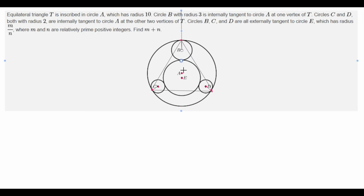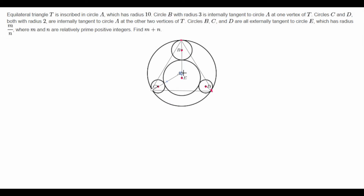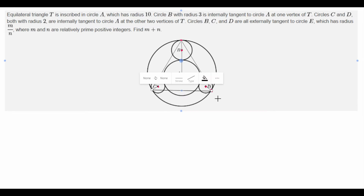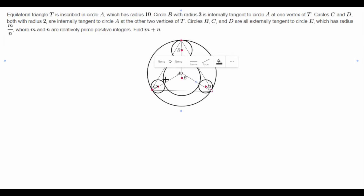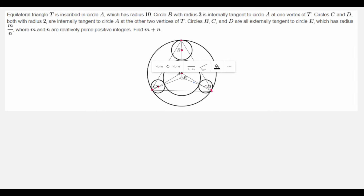So let's connect the circles right now. We see that B connects right here. Circle A is tangent to circle C at one vertex, which means that A, the tangency point, and C will be collinear. Same thing with A and D. And then let's connect the remaining centers with center E as well. So now we've connected a bunch of centers, and let's see what this will tell us about the problem.